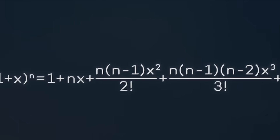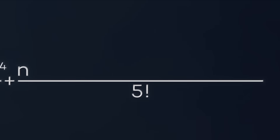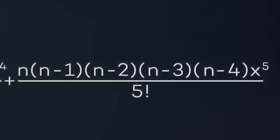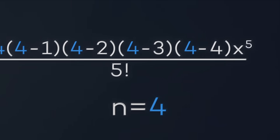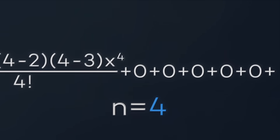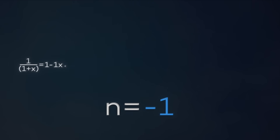When n is a positive integer, the coefficient looks like n(n−1)(n−2)... and when you get to (n−n), that factor is zero, so that coefficient and all after it are zero — that's why it's a finite sum. But once you go outside positive integers, you never hit (n−n) because n is not a positive integer, so you get an infinite series.